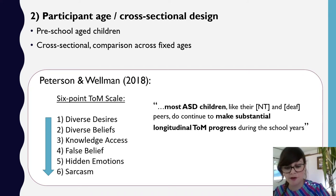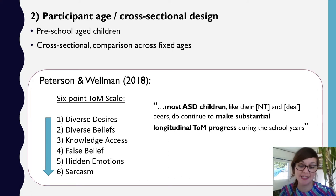So they found that most autistic children, like their neurotypical and deaf peers, do continue to make substantial longitudinal theory of mind progress throughout the school years. And so they may not be reaching the same level at the same age as their neurotypical peers, but they showed steady individual progress. So given the appropriate environmental stimulation, I don't think it's impossible to imagine that eventually, by adulthood or adolescence, autistic children might catch up to the same level of their neurotypical peers, but of course this hasn't really been measured yet.